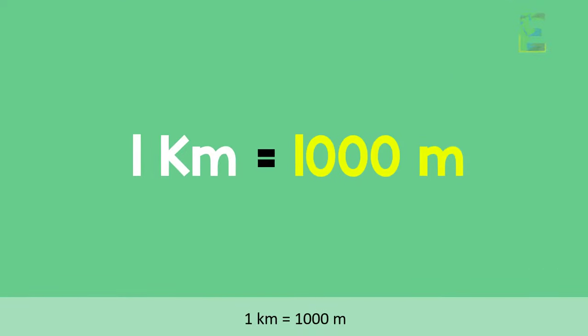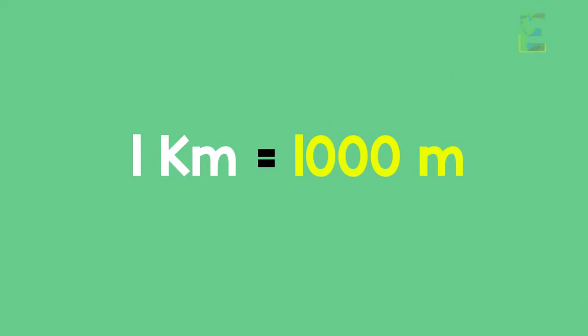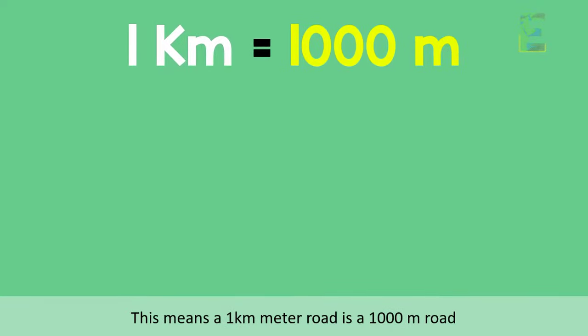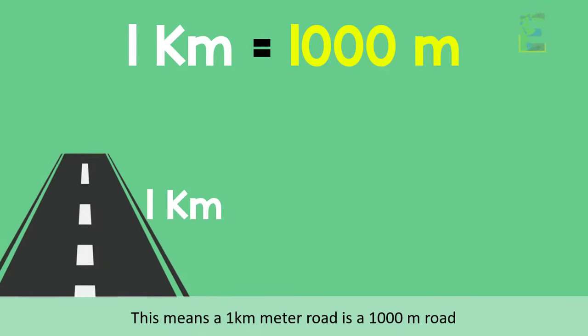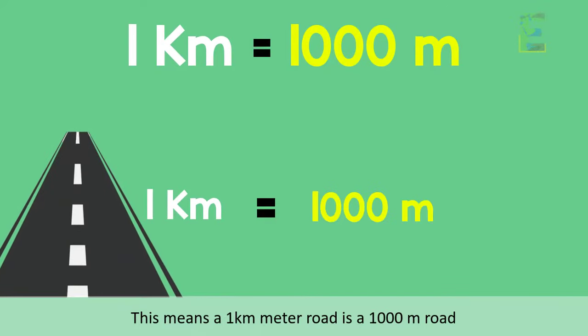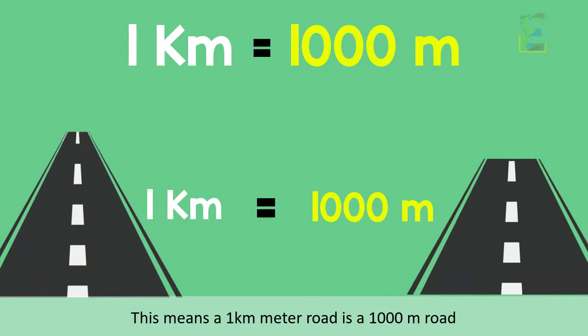1 kilometer is equal to 1,000 meters. This means a 1 kilometer road is a 1,000 meters road.